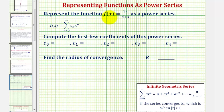We want to represent the function f(x) = 3x divided by the quantity 4 plus x as a power series in the given form. Then we want to compute the first few coefficients of the power series and find the radius of convergence.